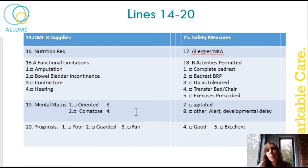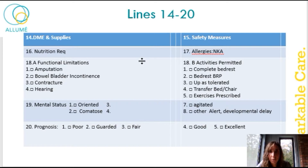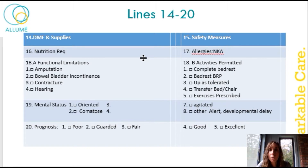Next we go to lines fourteen through twenty. Fourteen is the DME and supplies, which usually runs pretty long for our complex patients, so that will definitely run on to the other pages of your care plan. Fifteen is safety measures. Again, this part will be very lengthy and will need to go on to the other pages of your care plan.